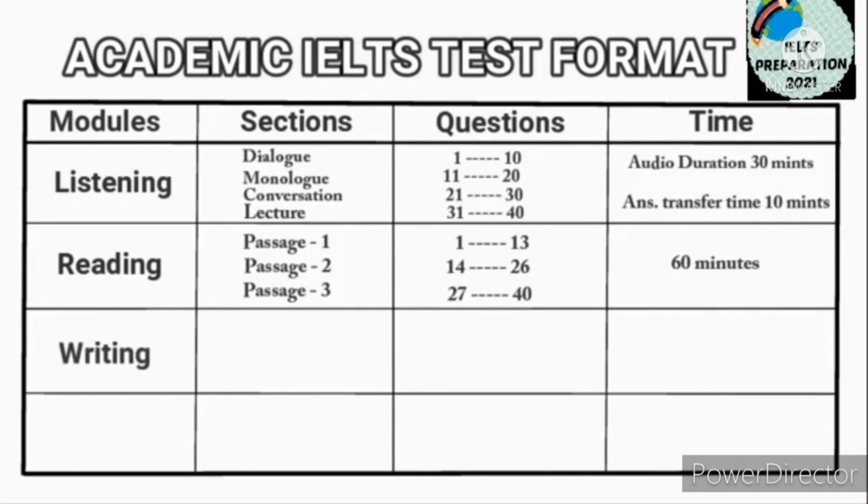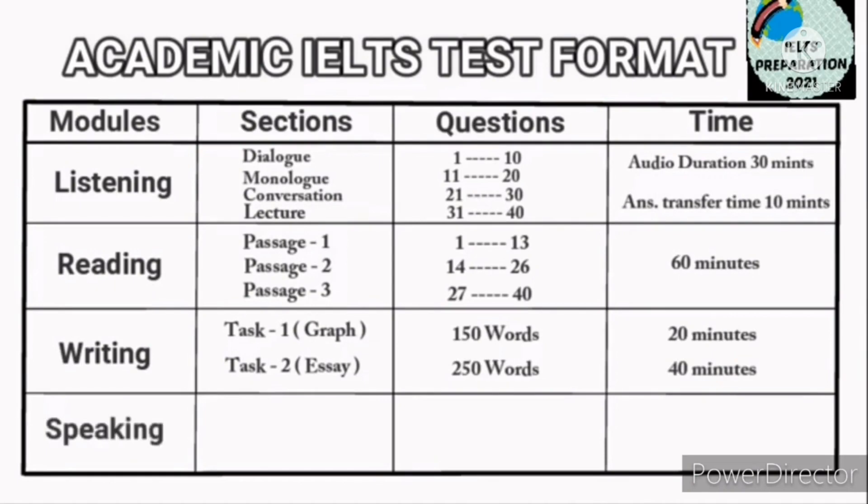In the writing module, we have two tasks: task 1 and task 2. Task 1 is a graph and task 2 is an essay. Task 1 graph is 150 words and the essay is 250 words, and time is 20 and 40 minutes respectively.